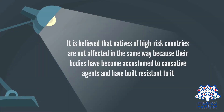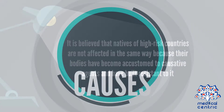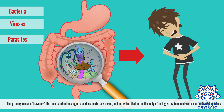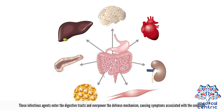It is believed that natives of high-risk countries are not affected in the same way, because their bodies have become accustomed to causative agents and have built resistance to it. The primary cause of traveler's diarrhea is infectious agents such as bacteria, viruses and parasites that enter the body after ingesting food and water contaminated by feces. These infectious agents enter the digestive tract and overpower the defense mechanism, causing symptoms associated with the condition.